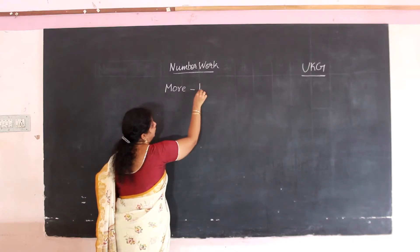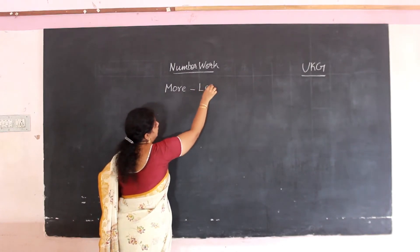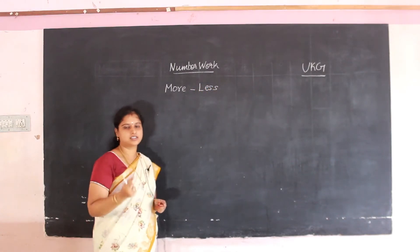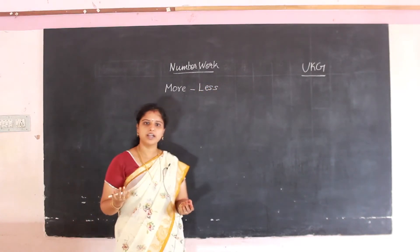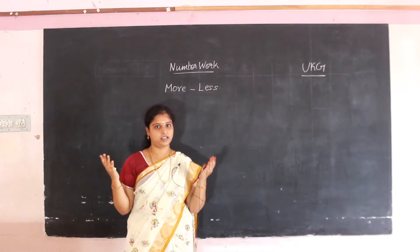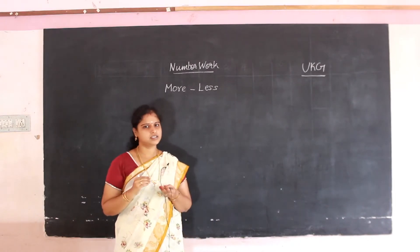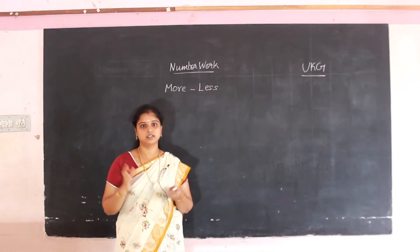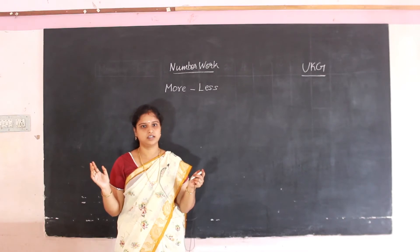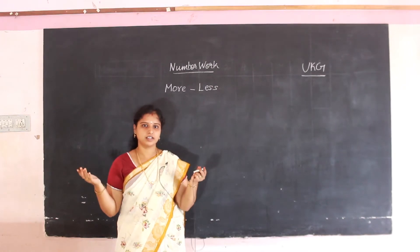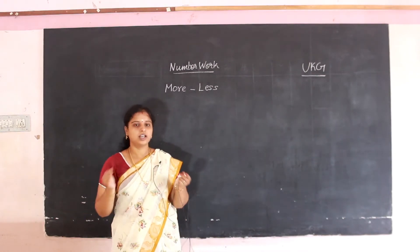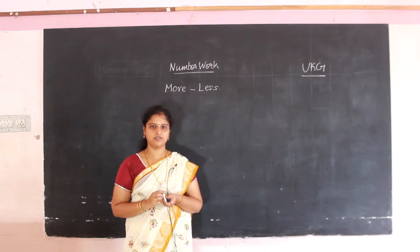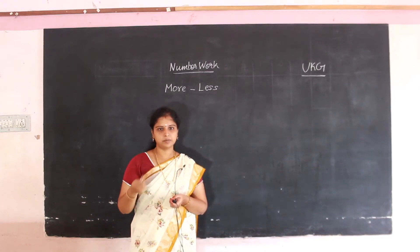More means naraiya (many/a lot). Less means koraiya (fewer/little). So 'more' means there is a greater quantity, and 'less' means there is a smaller quantity. Okay, let's look at some examples.